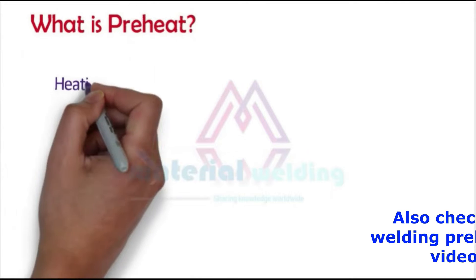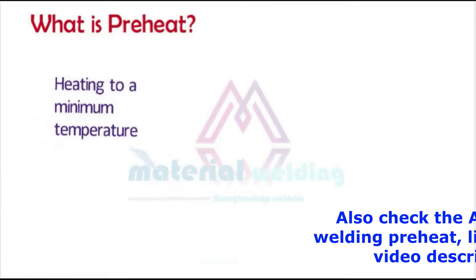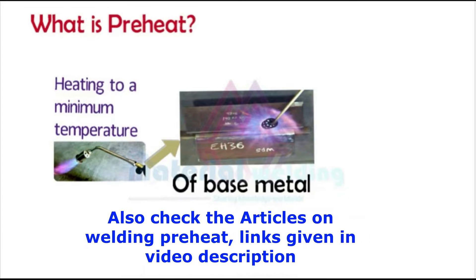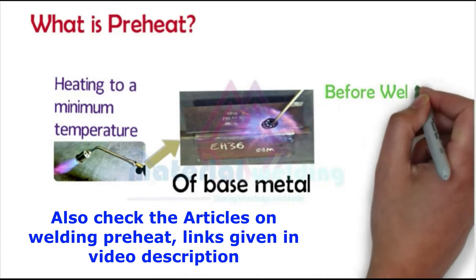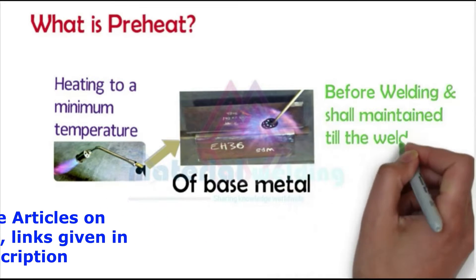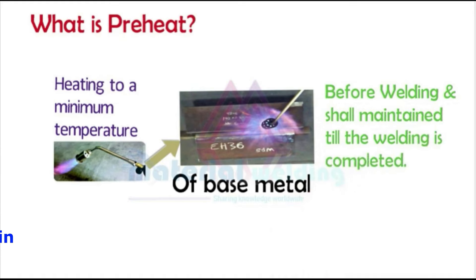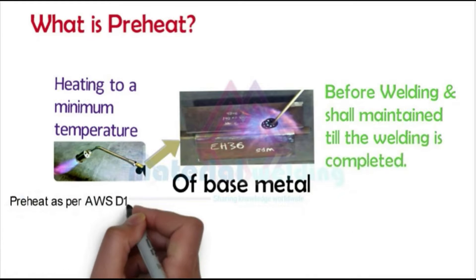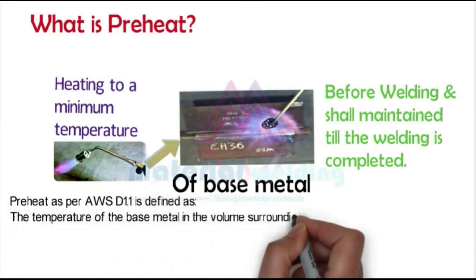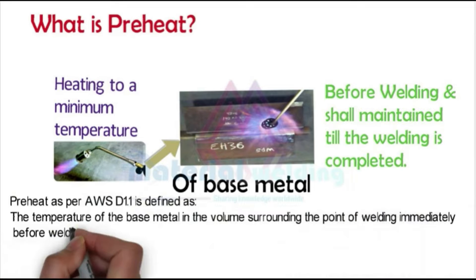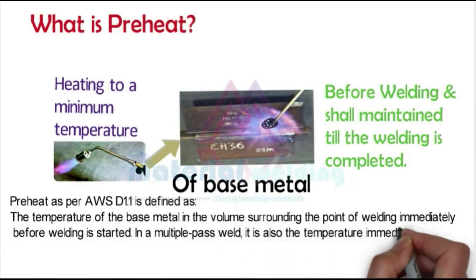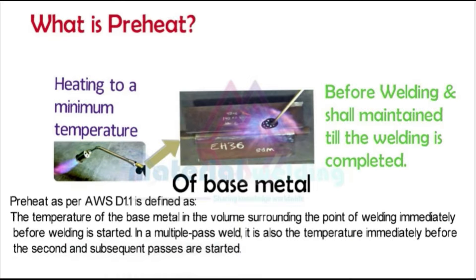So what is preheat? Preheat means heating the material to a specific minimum temperature before the start of welding, and it is maintained till the welding is completed. As AWS D1.1 defines it, welding preheat is the temperature of the base metal in the volume surrounding the point of welding immediately before welding is started. In a multi-pass weld, it is also the temperature immediately before the second and subsequent passes are started.